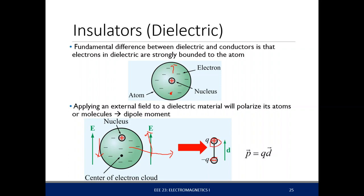This is equivalent to a positive charge Q bounded with a negative charge Q with a distance D — what we call a dipole. The electric field polarizes the atoms by pushing apart the nucleus and electrons, creating a dipole moment within the atom: P equals Q times d, where P is the dipole moment, Q is the charge, and d is the distance vector from negative to positive. The stronger the electric field, the larger the separation between nucleus and electron center, and the stronger the dipole moment.